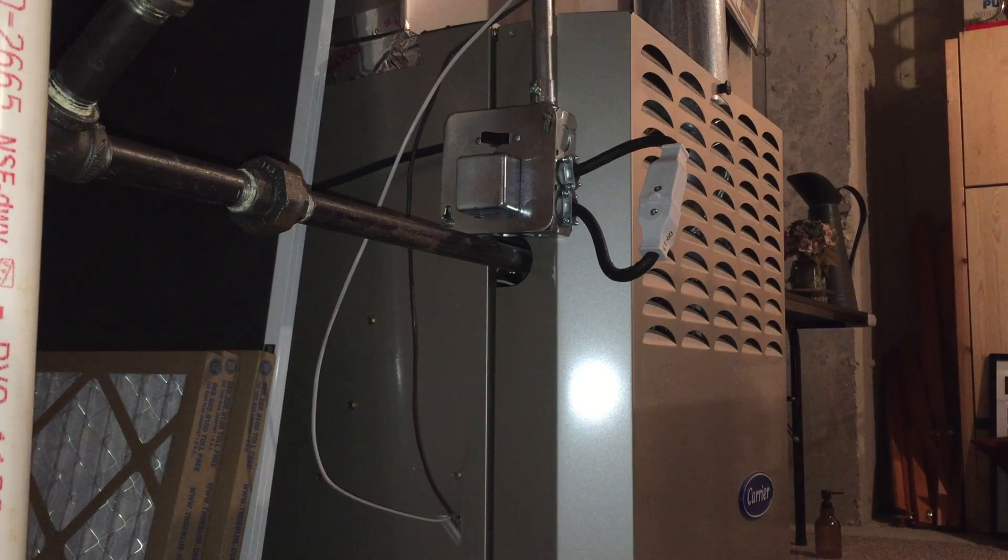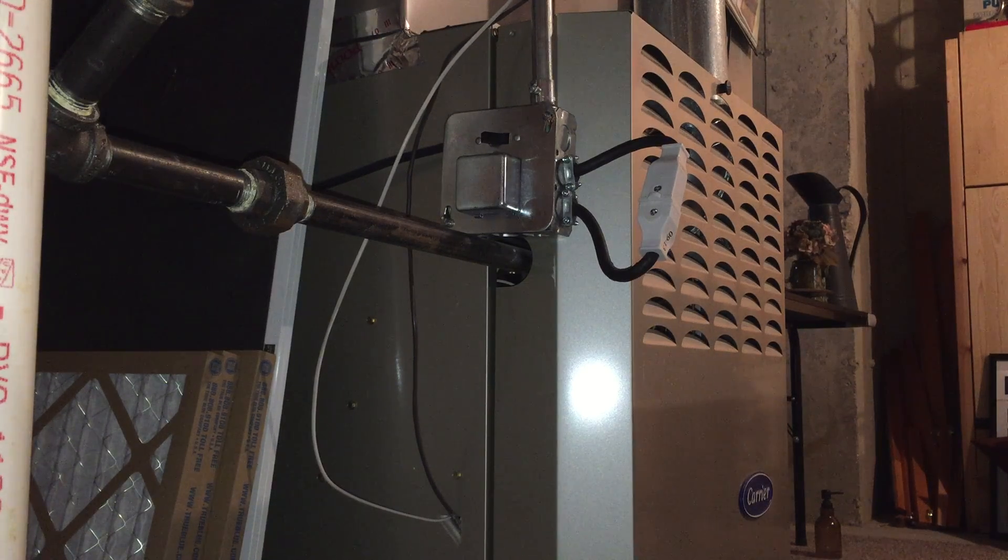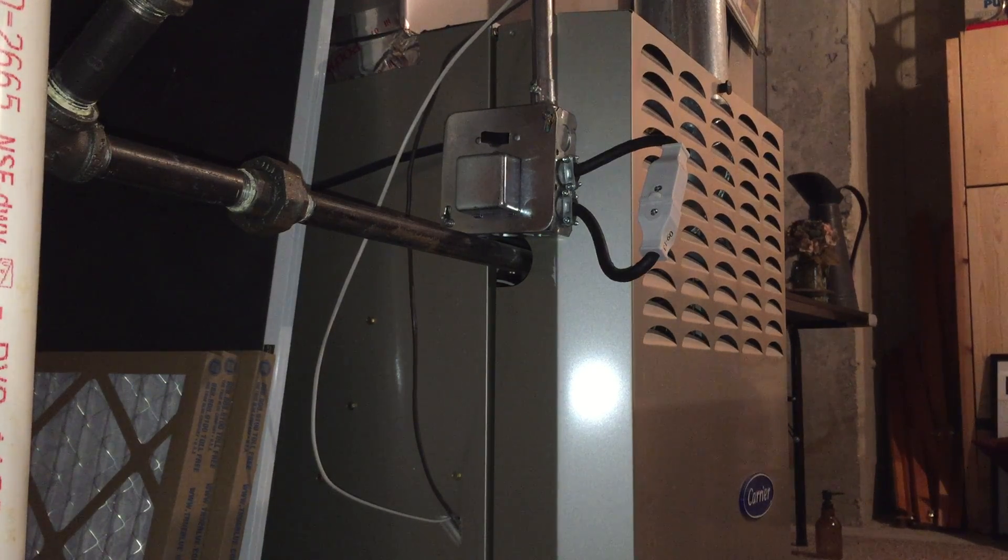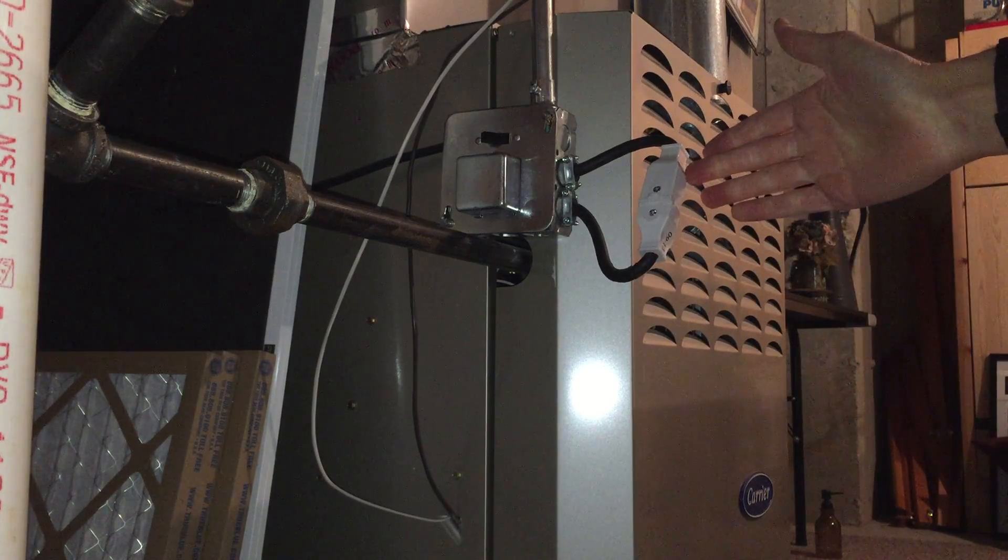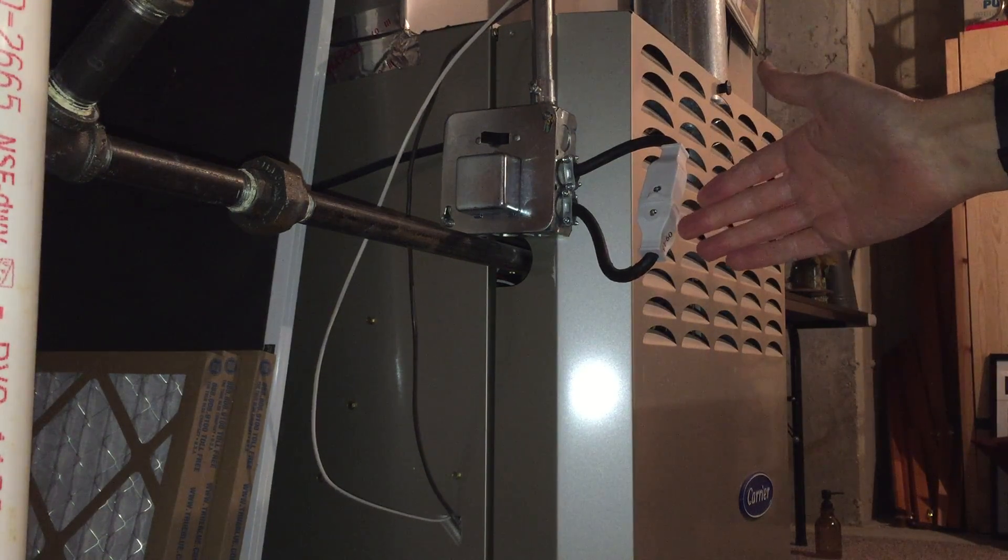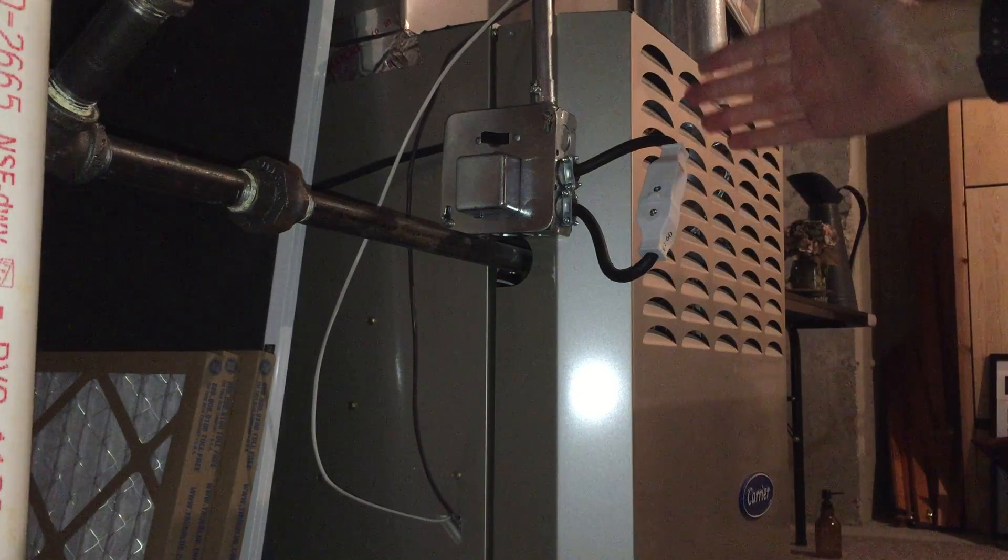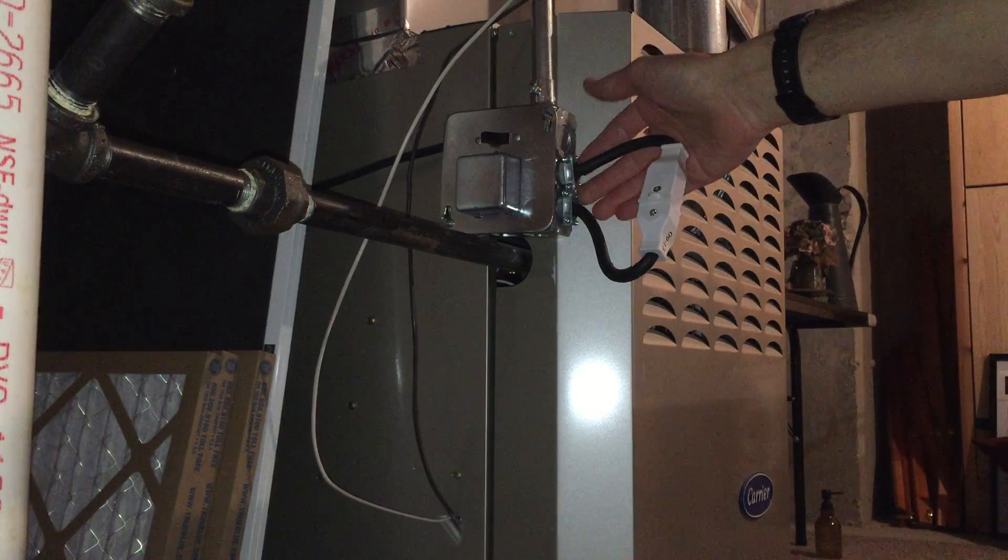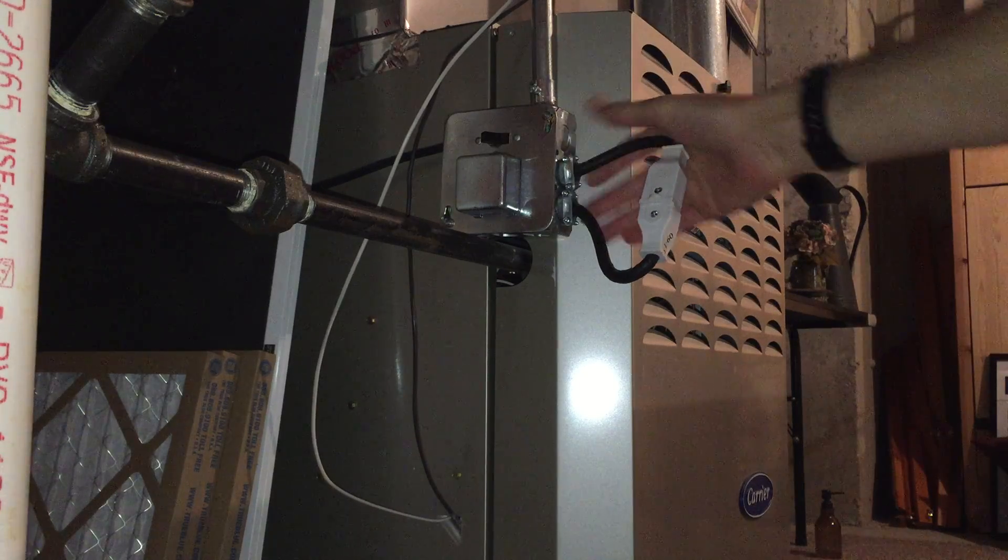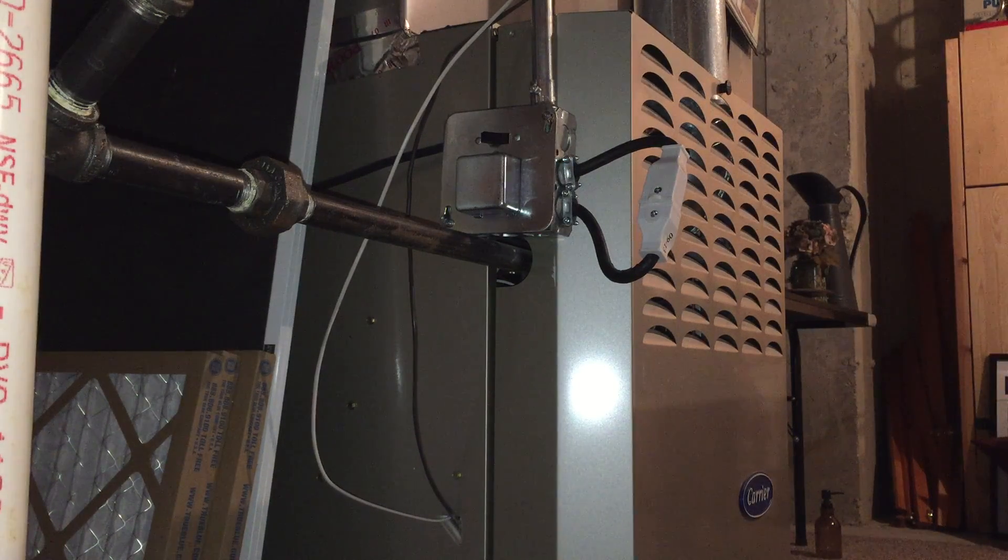So again, this is the simple way to set up your furnace to run off a generator. It costs about $15: about $5.50 for the male, $5.50 for the female, and then about maybe $2.50 for two feet of cord, a couple of wire nuts, a couple of these fittings here, and that's it. Alright, thanks.